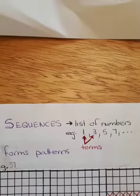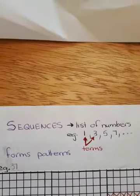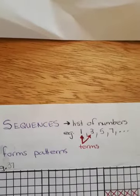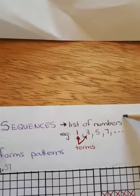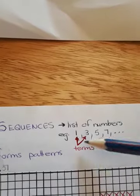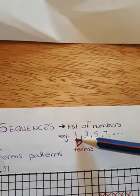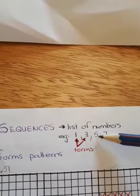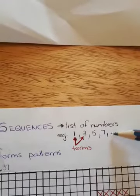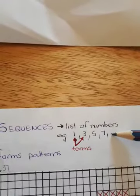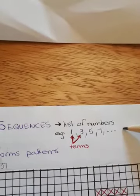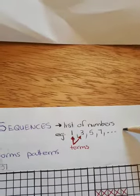Hello. Today we're going to start with sequences. Sequences is really nothing else than a list of numbers. For instance, we have the sequence 1, 3, 5, 7. This is the list of numbers, and we can go on in this pattern.